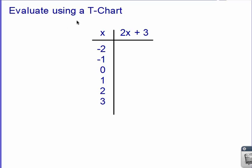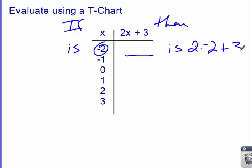It says, if x is negative 2, then 2x plus 3 is what? So it asks you a question. Our job is to find out what is the what. So we're going to take this negative 2, and plug it into this expression. So I take the negative 2, and I go 2 times negative 2 plus 3. 2 times negative 2 is negative 4, plus 3 gives me negative 1.